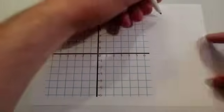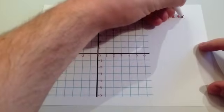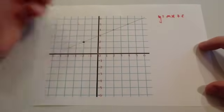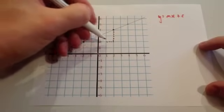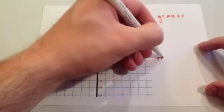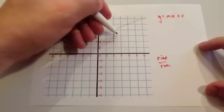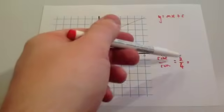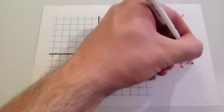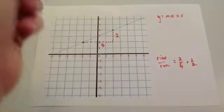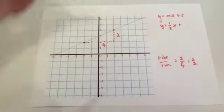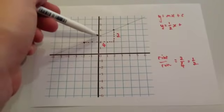We're going to find the equation of this line. It's y equals mx plus c, where m is the gradient and c is the y-intercept. Let's find the gradient by choosing two points on the line and turning it into a right-angle triangle. We're going to do rise divided by run. The rise is 2 and the run is 4. So 2 divided by 4 — you could write this as a decimal, 0.5, but I like to simplify the fraction to get a half. So the gradient is a half, giving y equals one-half x plus 3, since it crosses the y-axis at 3.